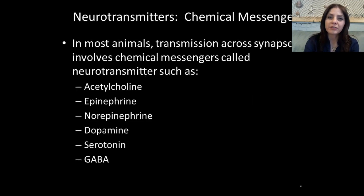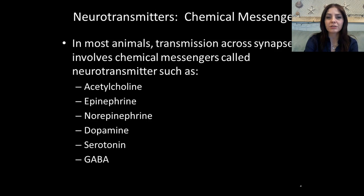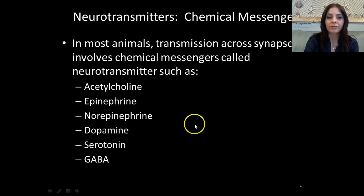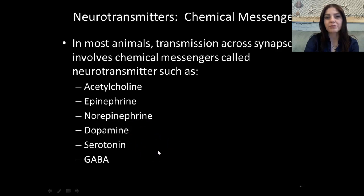We have different types of neurotransmitters, and these are chemical messengers. In most animals, transmission occurs at the synapses, and it involves messengers that are made out of chemicals — those are called neurotransmitters. We have a couple of main groups of neurotransmitters: acetylcholine, epinephrine, norepinephrine, dopamine, serotonin, and GABA.